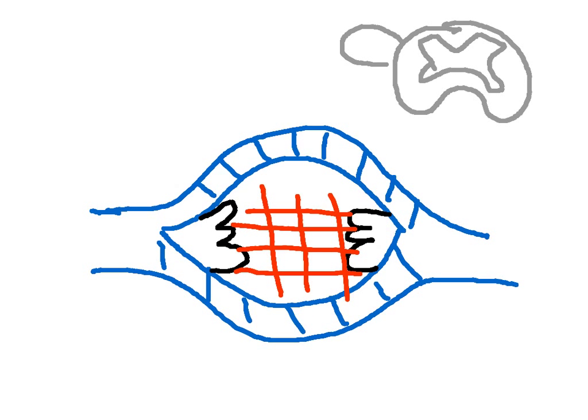The muscle spindle is normally activated when you're given a load and your arm drops slightly. The correction that prevents hyperextension is caused by the muscle spindle fibers. When your hand is outstretched and given a load, it stretches the extrafusal fibers, which pulls on the muscle spindle drawn in the middle. On either side are the intrafusal fibers. This stretch causes the muscle spindle fibers to fire via the afferent neuron, which goes through the dorsal root ganglion.